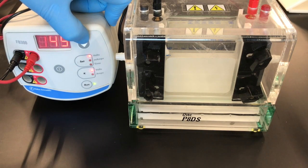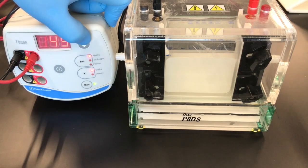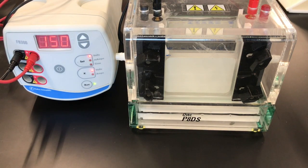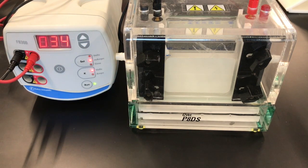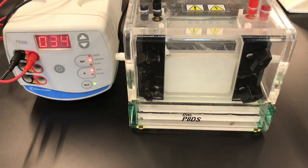We're going to run it at 150 volts in order to get the samples past the stacking gel. Once the samples have traveled through the stacking gel and have reached the resolving gel border, then we can turn it up to 250 volts and let it run at 250 volts for the remainder of the gel.